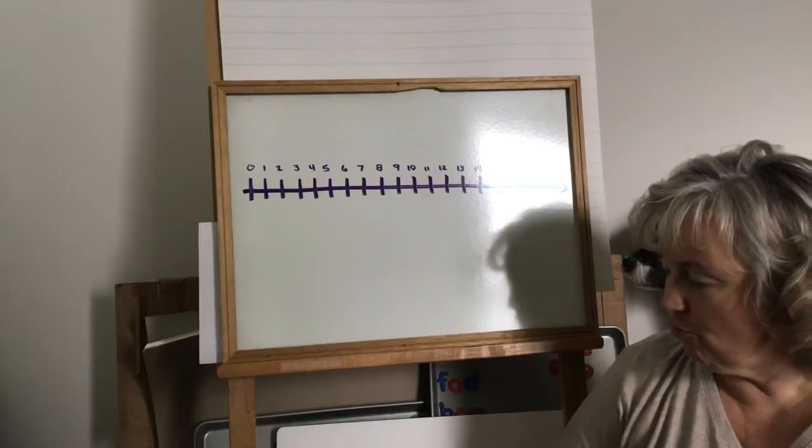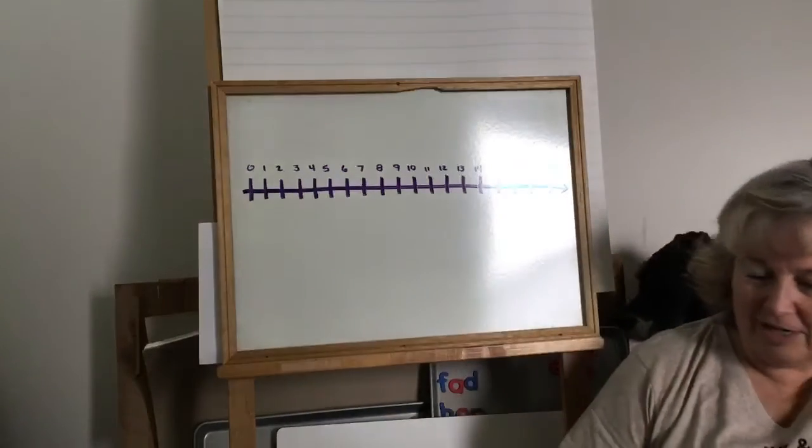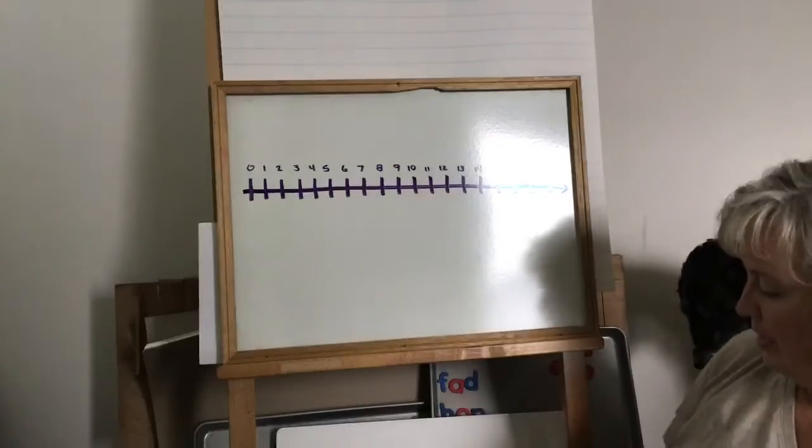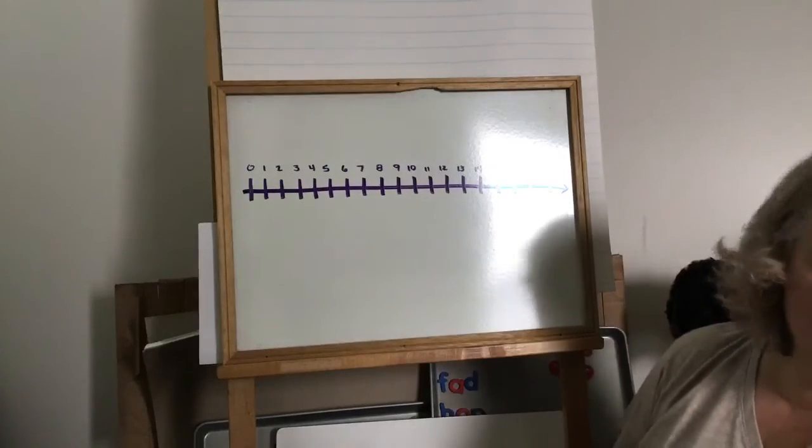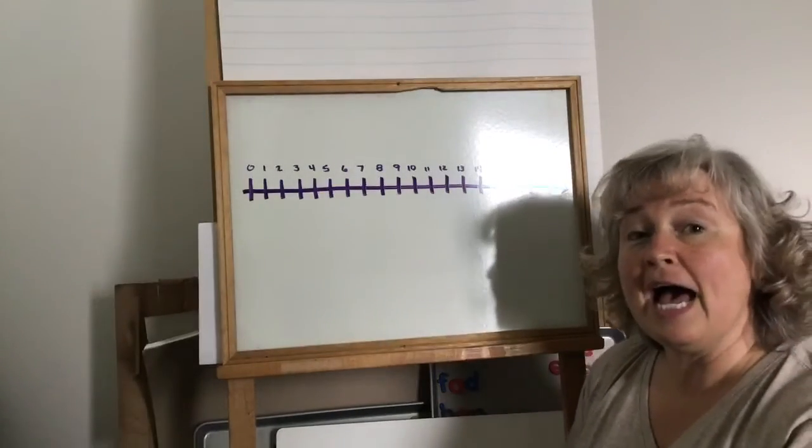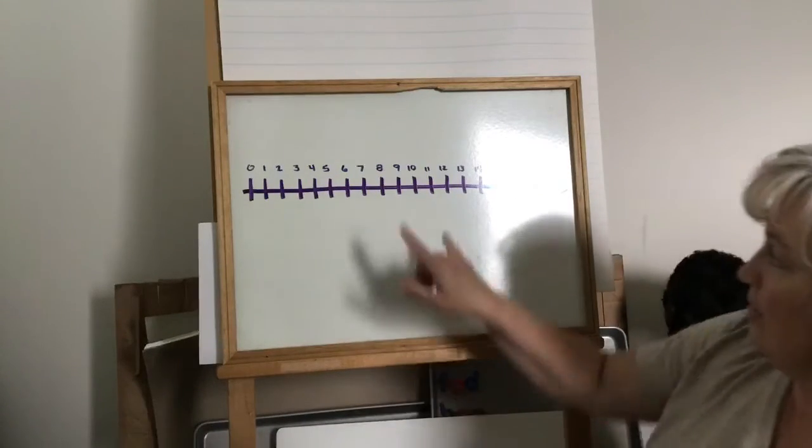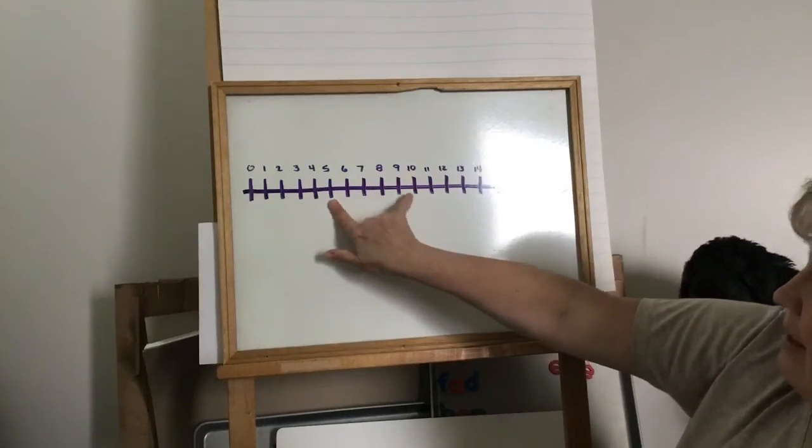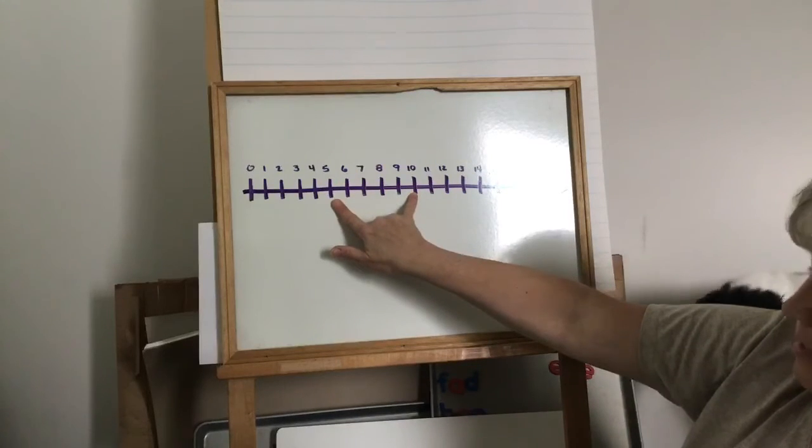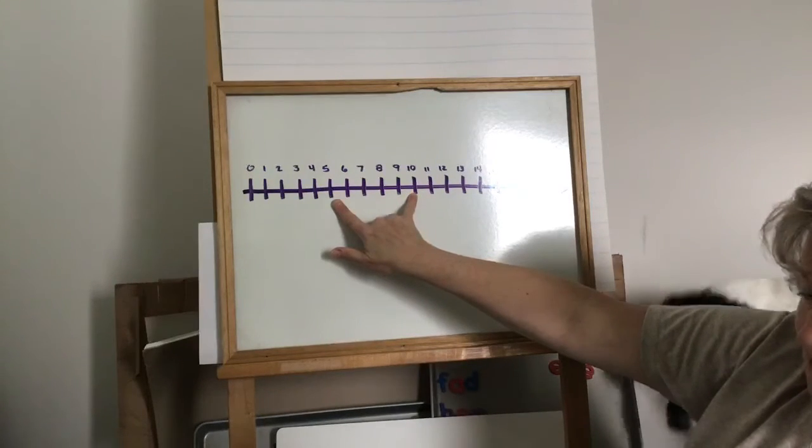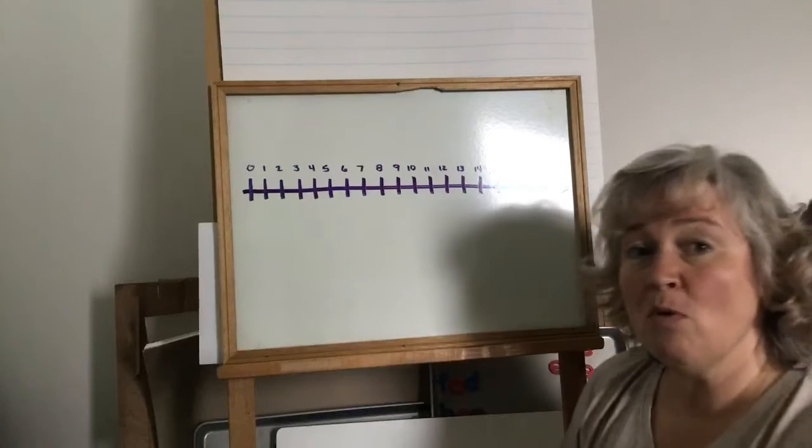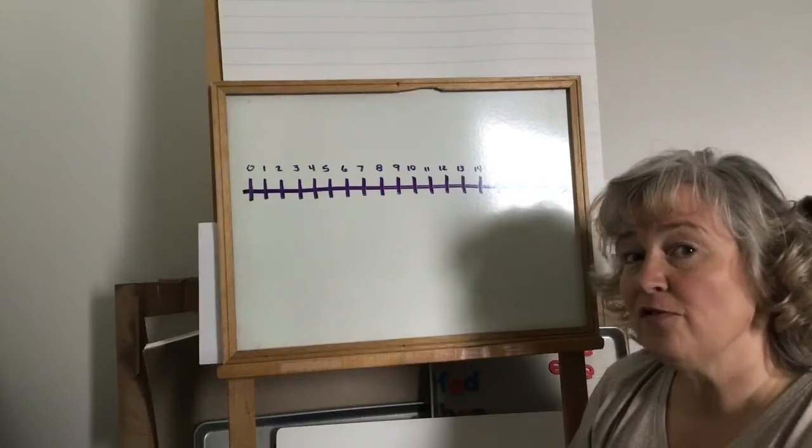So my first riddle. We'll see if we can solve this. My first riddle says, I am between five and ten. So I'm in between the numbers five and ten. I am more than four plus four.